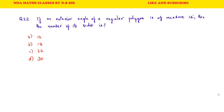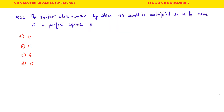If an exterior angle of a regular polygon is of measure 12 degrees, then find the number of its sides. We know that the sum of all exterior angles is 360 degrees. So, dividing 360 by 12, we get 30. So D is the correct answer to question 22.